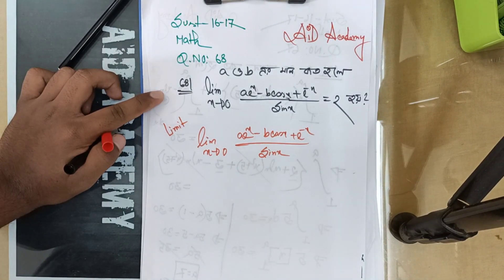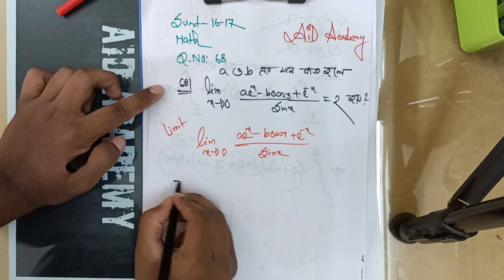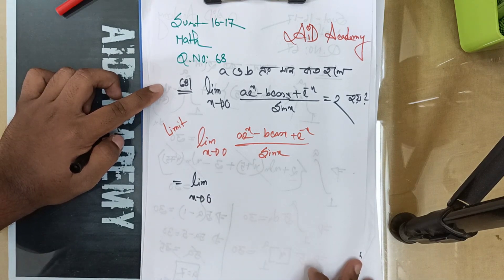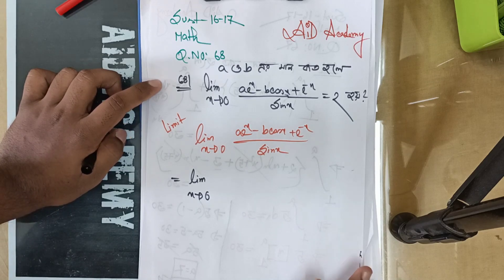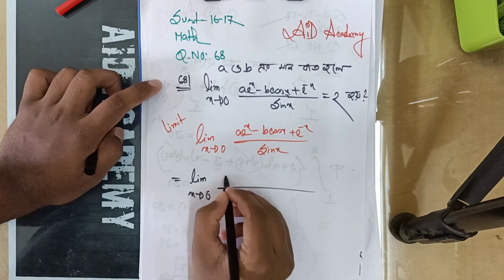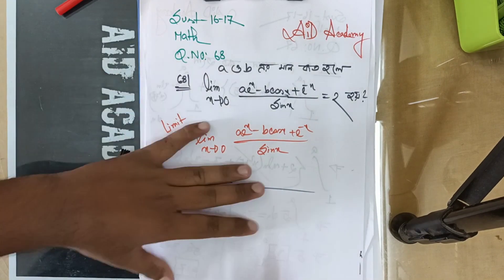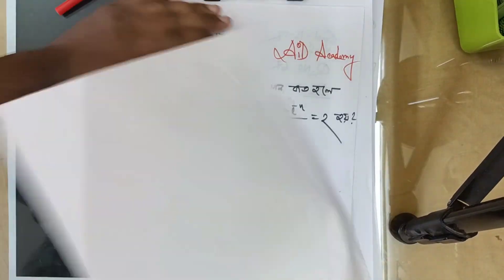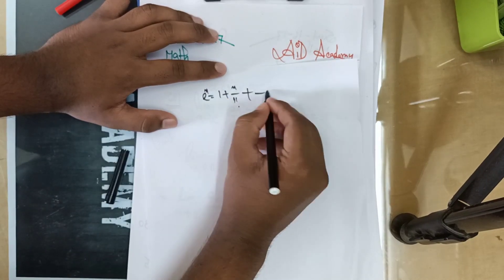This is our limit expression. We have to solve the limit. We have to solve the limit to find the basic problem, solve the main rule. We know the formula: about this formula — 1 plus x by 1 factorial, x squared by 2 factorial, and so on.